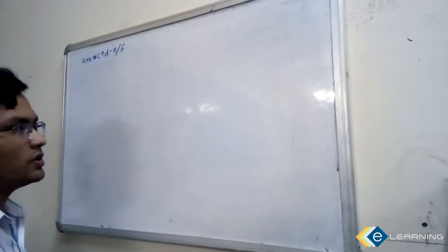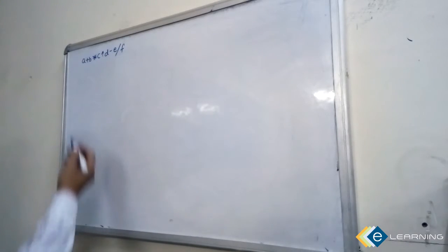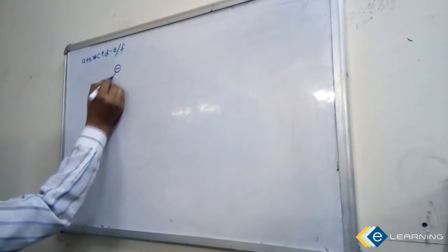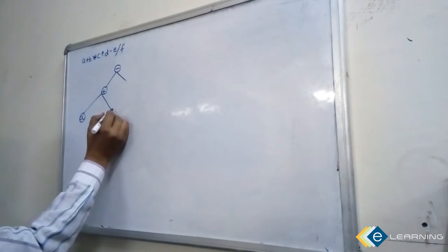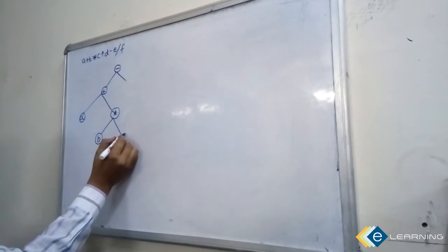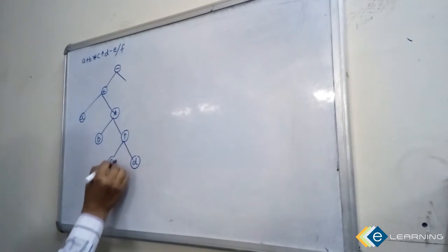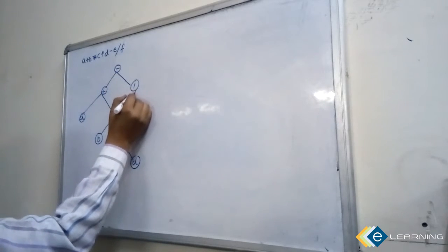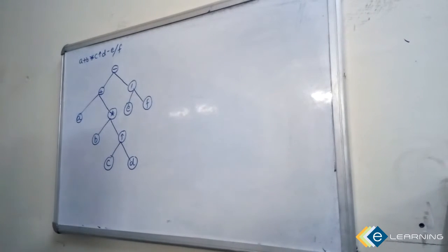In this video I am going to discuss how to find in-order, pre-order, and post-order tree traversals. In the previous video we constructed an expression tree for an expression. The tree had nodes: plus, A, times B, and pi C and D.